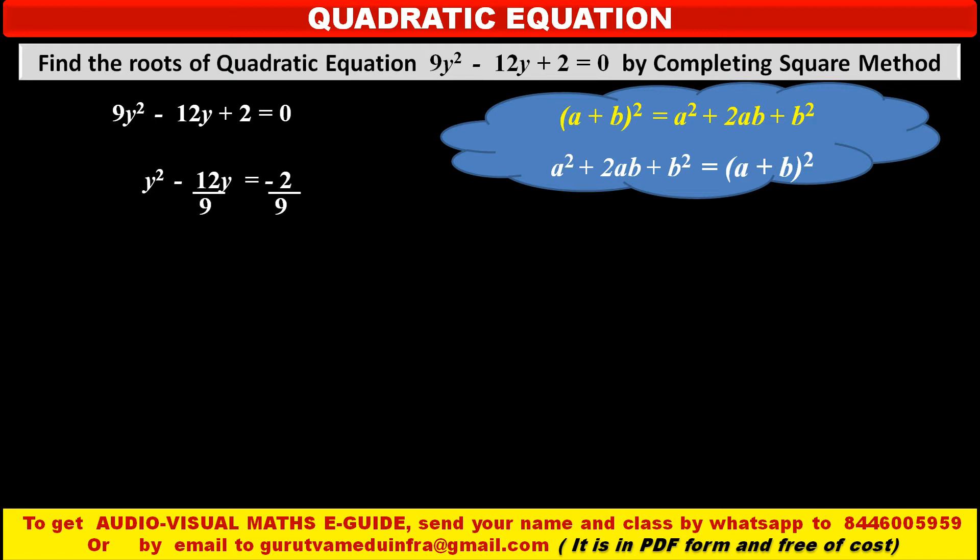Now, we have to apply this formula in this problem. In the left hand side especially we want three terms like a² + 2ab + b² so that we can make complete square like (a + b)². So here we want third term. We have two terms, we want third term.